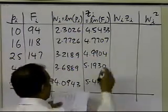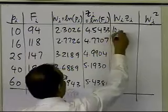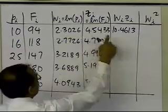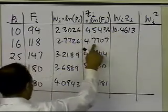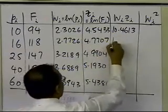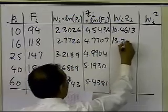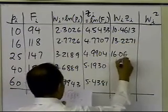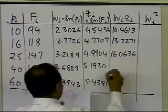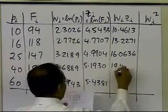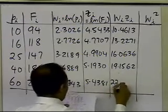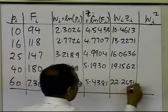These w_i z_i values are 10.4613, which is simply the multiplication of these two numbers. Multiplication of these two numbers gives me 13.2271, then I get 16.0636, 19.1562, and 22.2654.